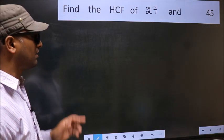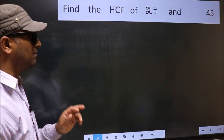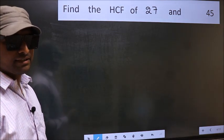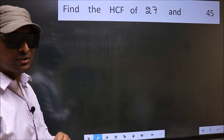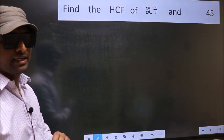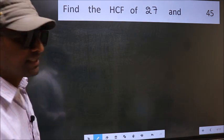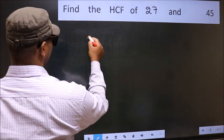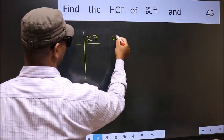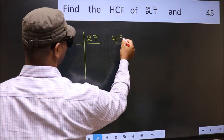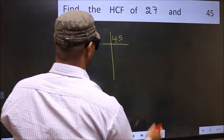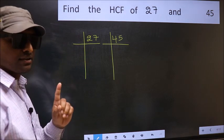Find the HCF of 27 and 45. To find the HCF, we should do the prime factorization of each number separately — that is, 27 and 45. This is step 1.